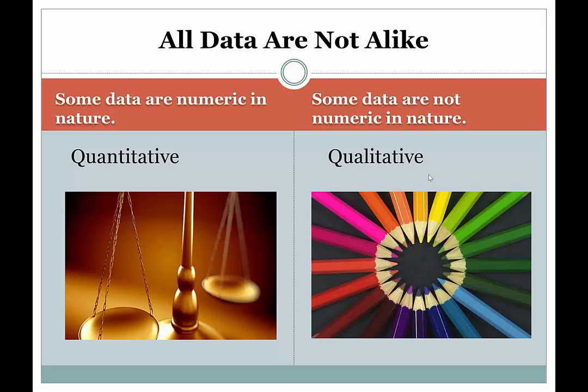So it could be the color of something or the name of something. Those are characteristics. It could be something like on a driver's license, we have a classification of sex and eye color. Those things are qualitative in nature. You also have height on a driver's license. Now, height would be quantitative because it's a number.